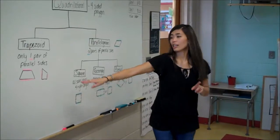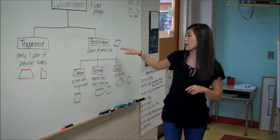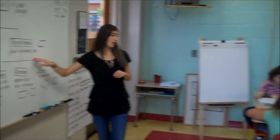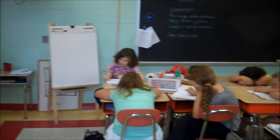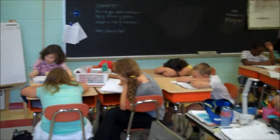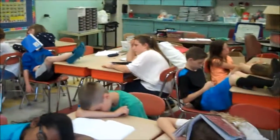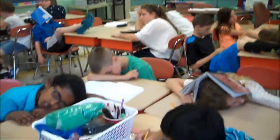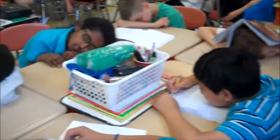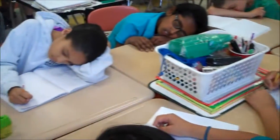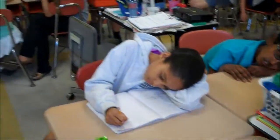The other way is a parallelogram that has how many pairs of parallel sides? Two. There are three types of parallelograms: square, rectangle, and rhombus.